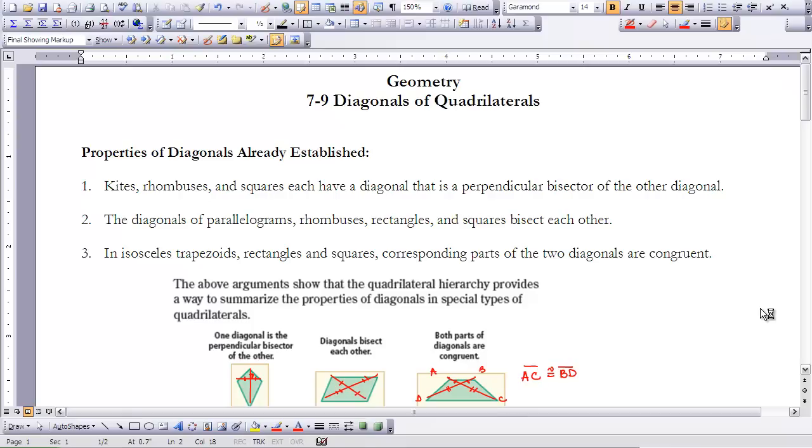So we're going to put together all of the different properties that came about as we studied those quadrilaterals and see how they can be organized in a hierarchy based on diagonals. And you'll notice that as we organize those in a hierarchy, it really takes on the same shape as our special quadrilateral hierarchy.